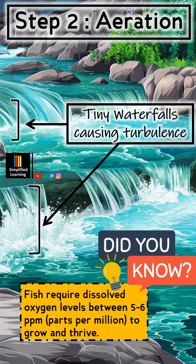Step 2: Aeration. Rivers often have turbulent flow due to rocks, waterfalls, and ripples, which help in aeration. Air is trapped and mixed with the water, increasing the dissolved oxygen level. Higher oxygen levels are crucial for supporting aquatic life and promoting the activities of aerobic bacteria that help break down organic pollutants.